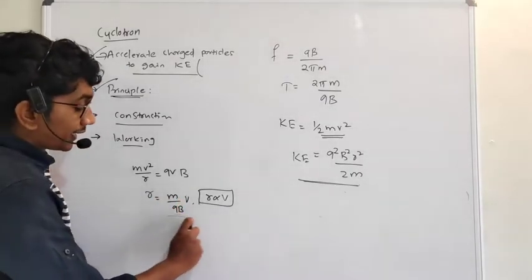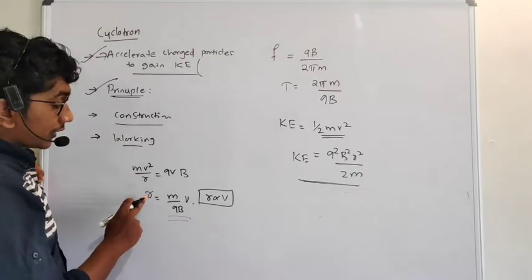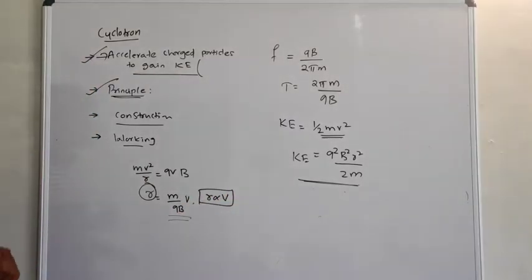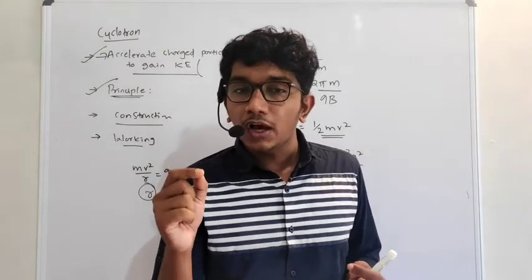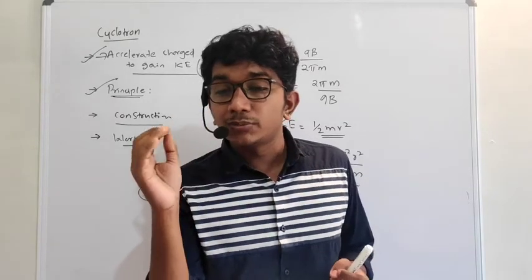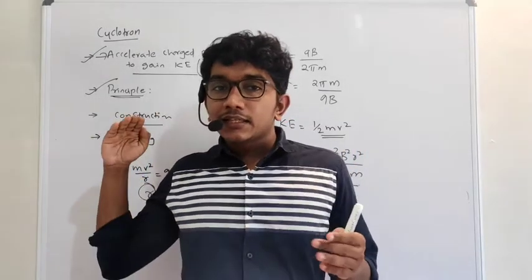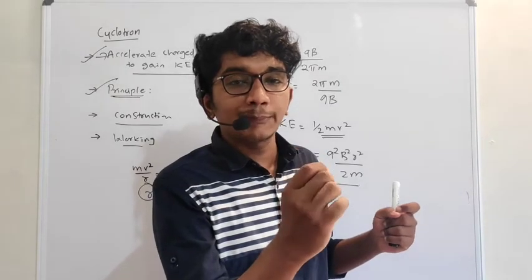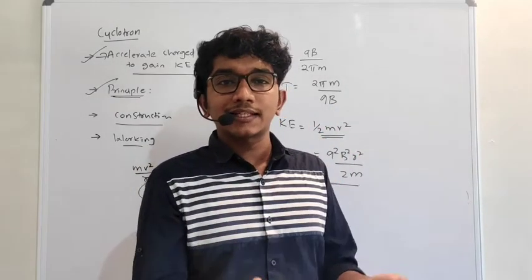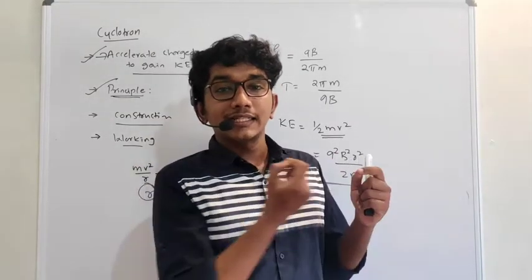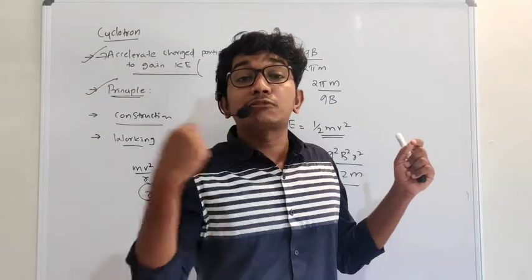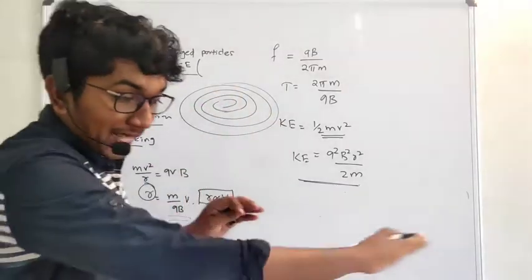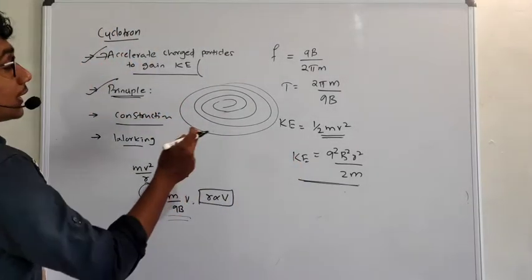R = Mv/QB, and it is very clear that R is proportional to V, the velocity. Which means if the velocity of the particle increases, the radius increases. Initially, forces keep acting on the particle, so acceleration happens, velocity increases, and therefore the radius increases. So the path would be like a spiral structure — it would be a spiral in a plane like that.